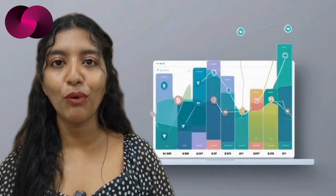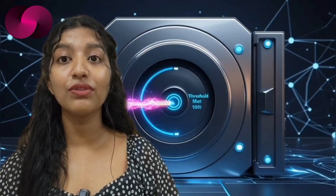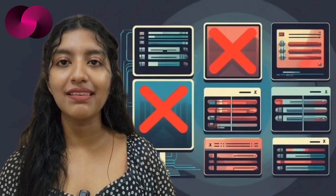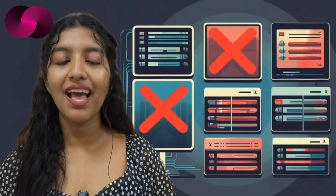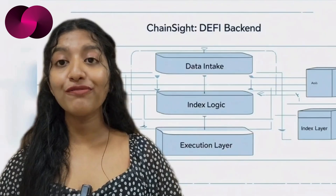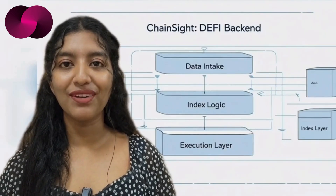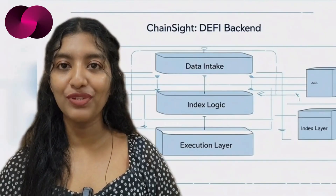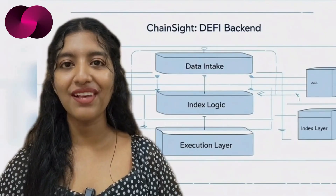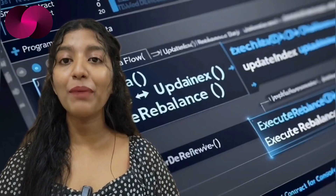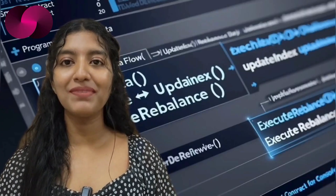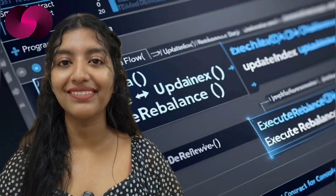Another key feature is the cross-chain reader, which tracks price and liquidity data across multiple chains including EVM networks, Solana, and Move-based platforms. This lets users create indices that work across ecosystems and maintain a unified portfolio view. Execution is handled through threshold signing, removing the need for multi-sigs or bridges and reducing central points of failure. All of this supports ChainSite's aim to serve as a full back-end layer for DeFi builders, offering programmable control from data intake through to execution.